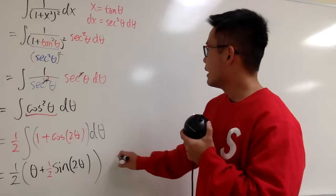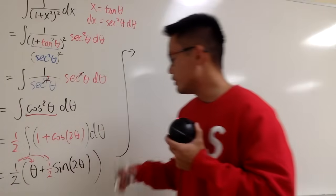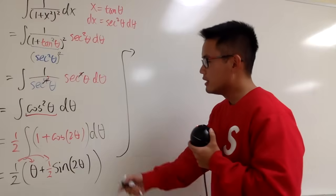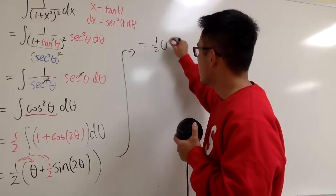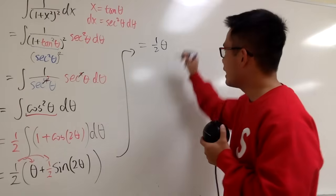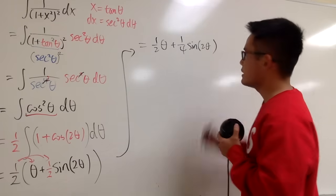So that's pretty much it. And now we can distribute the usual way. So let's do that. This is the same as saying, 1 half theta, and 1 half times 1 half is plus 1 fourth, and we have sine of 2 theta like this.